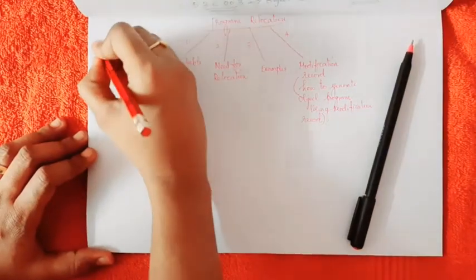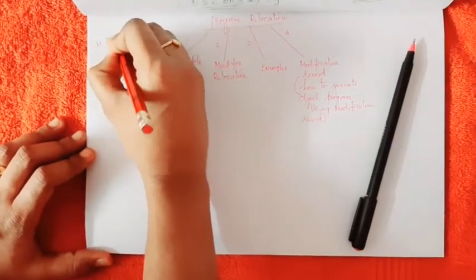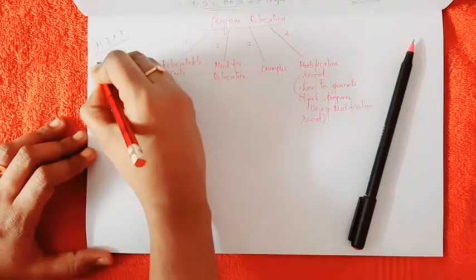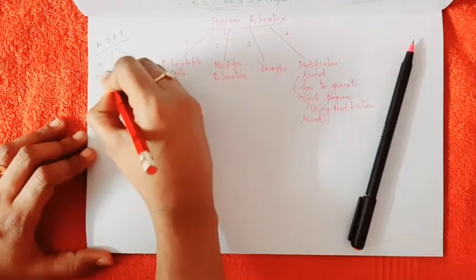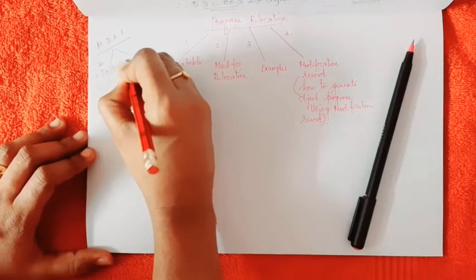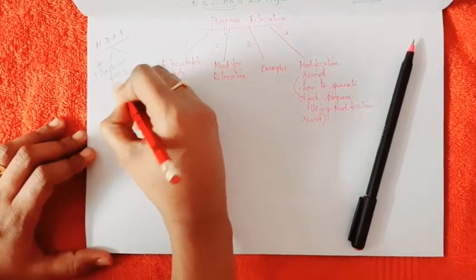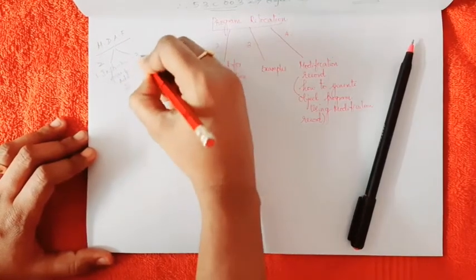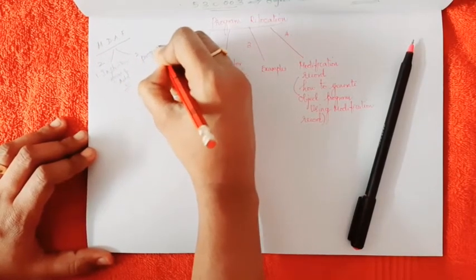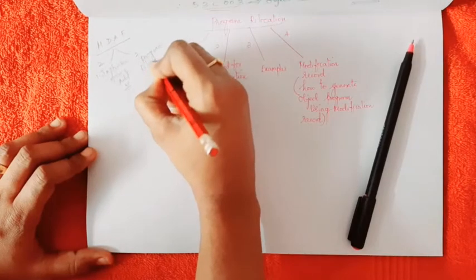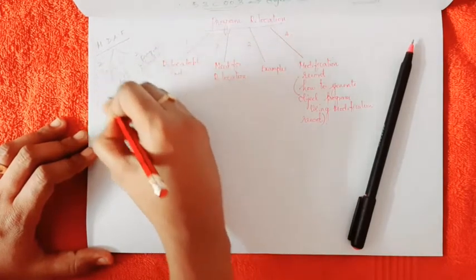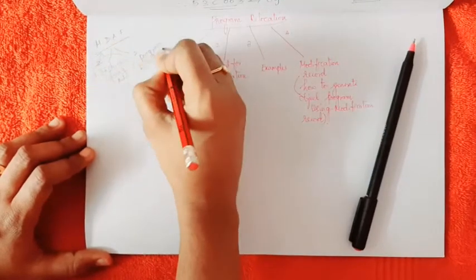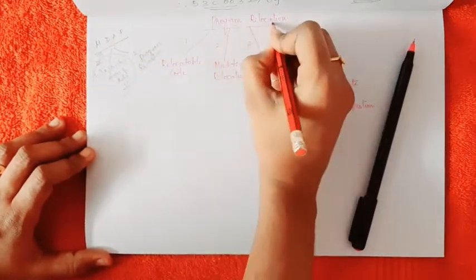In our last video, we studied machine-dependent assembler features. In that, we saw two features: one is instruction formats and addressing modes, and the second one is program relocation. Instruction formats and addressing modes were studied in the previous video, and now we are going to study about program relocation.